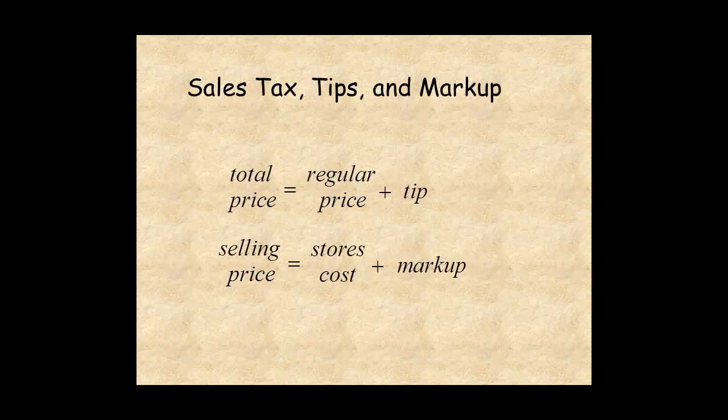There are other examples of increasing a quantity by a percent. A tip or gratuity is a small amount of money in return for service. The total price is the regular price of the service plus the tip. Service refers to what you get in a restaurant or barbershop.